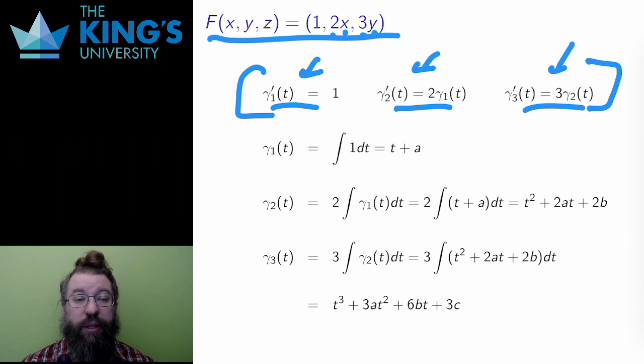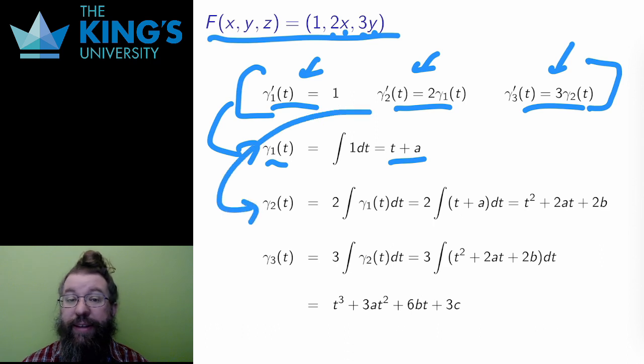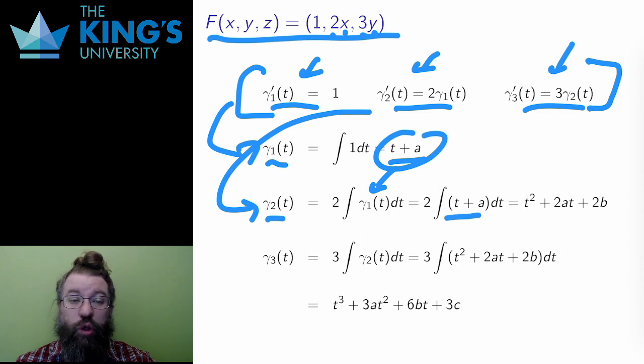This is approachable because I can solve the first DE, then use that for the second, and then use that for the third. To solve the first DE, I just integrate. The integral of 1 is t plus a constant a, so γ₁ is t + a. Then I look at the second DE. Again, I can integrate both sides to get γ₂ on the left. γ₁ is inside the integral on the right, but now that I know γ₁, I can replace it and integrate, and the result is that γ₂ is a quadratic, t² + 2at + 2b, with b some new unknown constant.